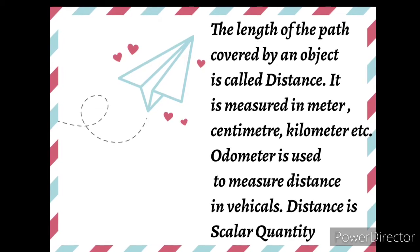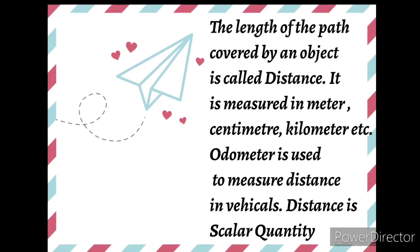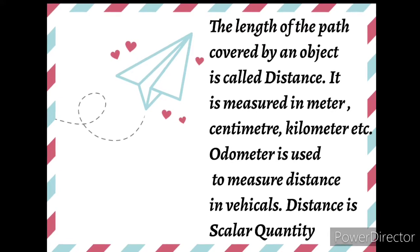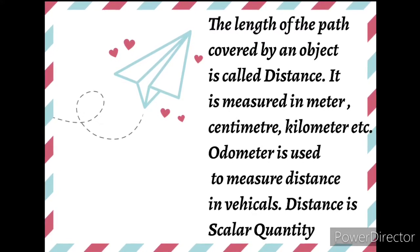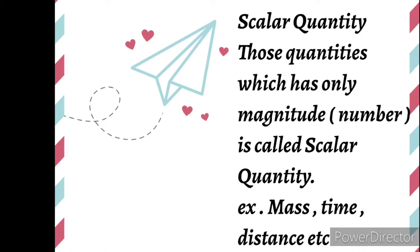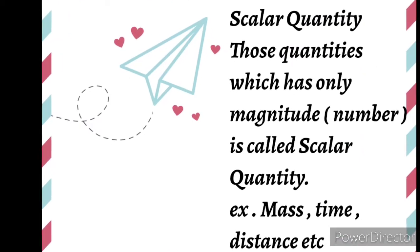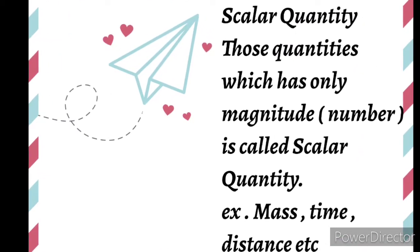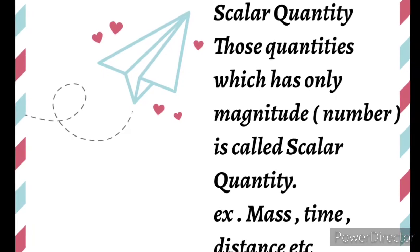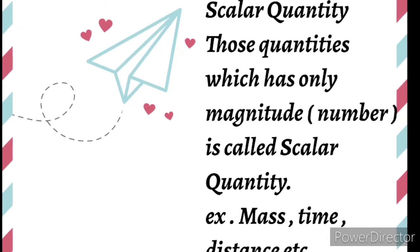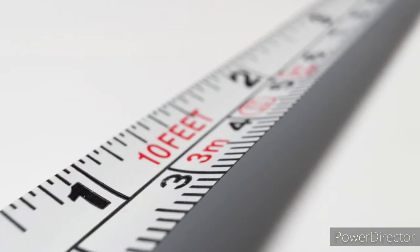Distance can be measured in meters, kilometers, feet, inches, etc. Distance is a scalar quantity. Those quantities which can be represented only by their magnitude, that is a number, are called scalar quantities. Examples include time, mass, and distance.